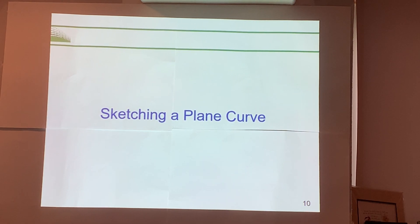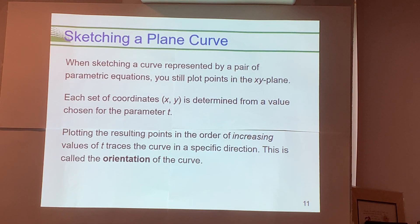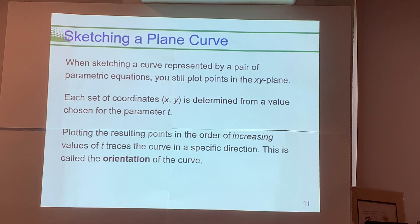Sketching a plane curve: we're going to pick increasing values of t, substitute them into the parametric equations, figure out what x(t) and y(t) are, and plot those as ordered pairs. In plotting them in order of increasing t values, we trace the curve in a specific direction — called the orientation. That's the meat and potatoes of what parametric equations are and how to graph them. Let's take a look at doing this more concretely.